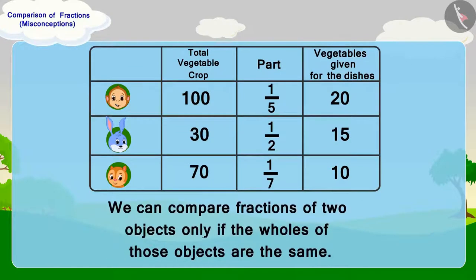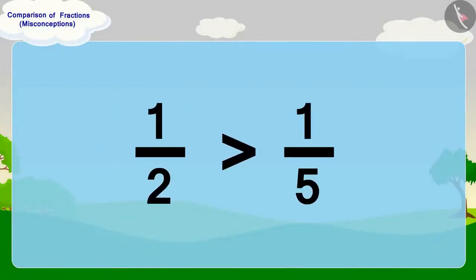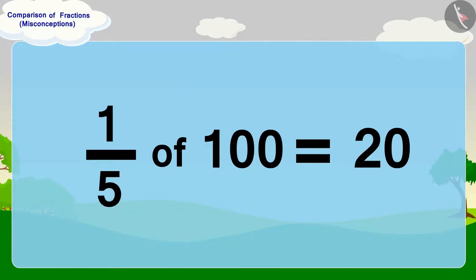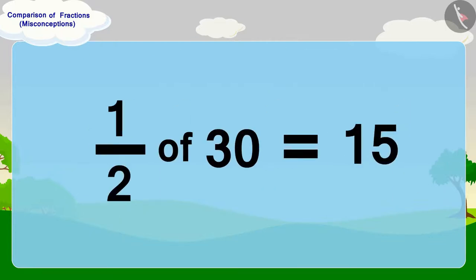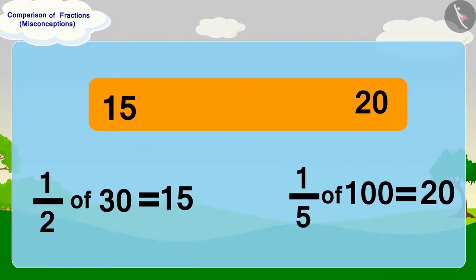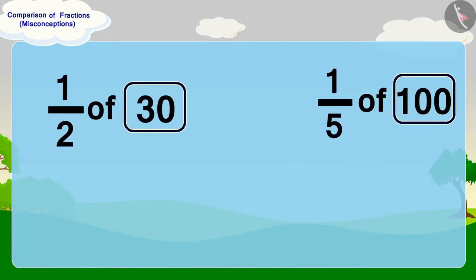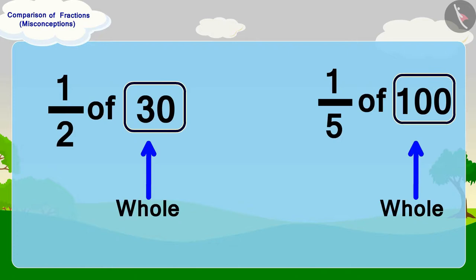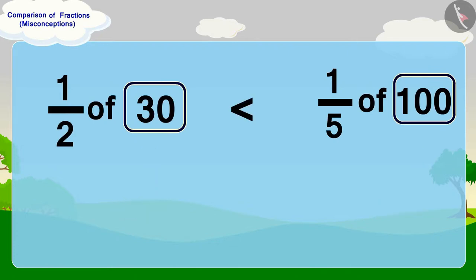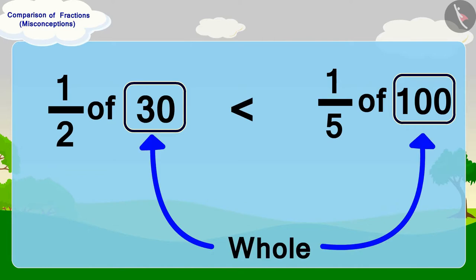Children, keep in mind that we can compare fractions of two objects only if the wholes of those objects are the same. As we know, the fraction one-half is more than one-fifth. But if we talk about one-fifth of 100, which equals 20, and half of 30, which equals 15, then we can see that half of 30 is smaller than one-fifth of 100, because their wholes are not the same. Therefore, to compare fractions, we must pay attention to fractions as well as their whole.